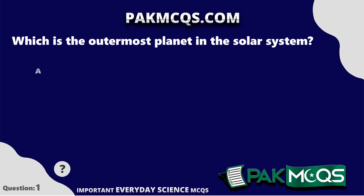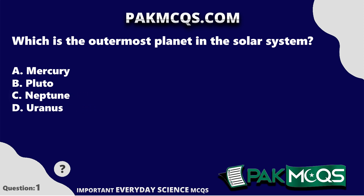Which is the outermost planet in the solar system? Neptune.